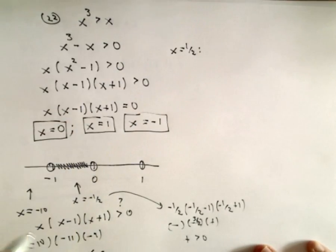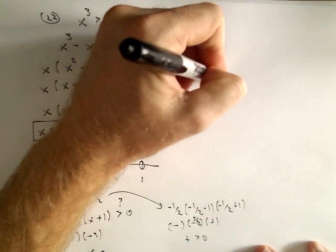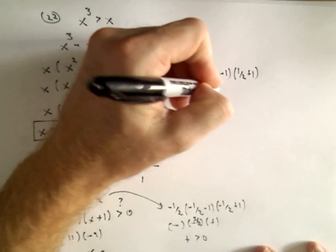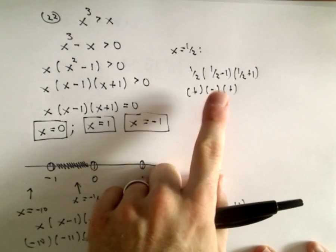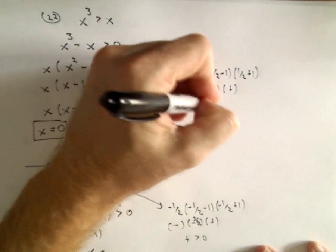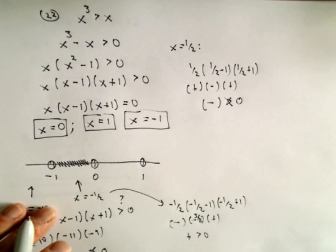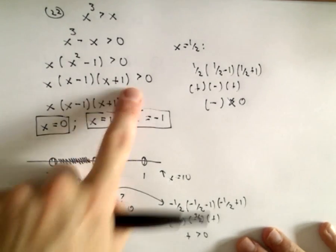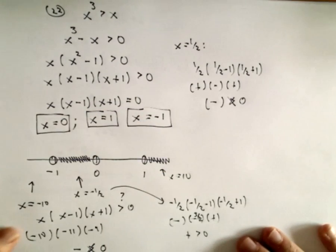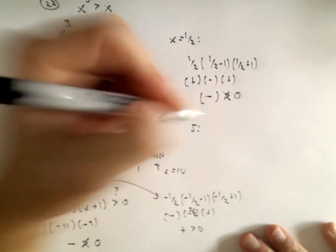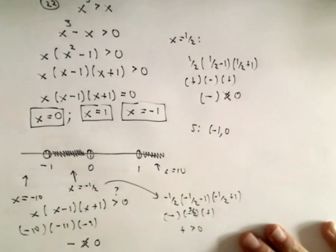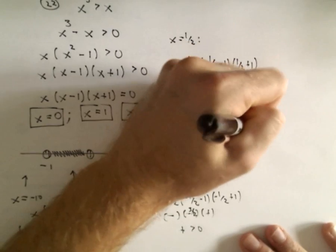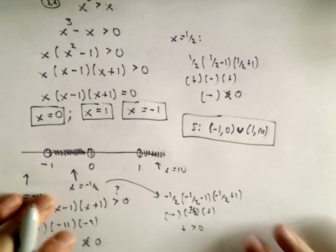If we use x equals one half, we'll have one half, one half minus 1, and one half plus 1 — that's a positive times a negative times a positive, which is negative. A negative number is not greater than 0. And if we use x equals positive 10, it'll be positive times a positive times a positive, which is certainly greater than 0. So anything greater than 1 also works. Our solution set will be from negative 1 to 0 — parentheses because the endpoints don't satisfy the inequality — union from 1 to positive infinity.